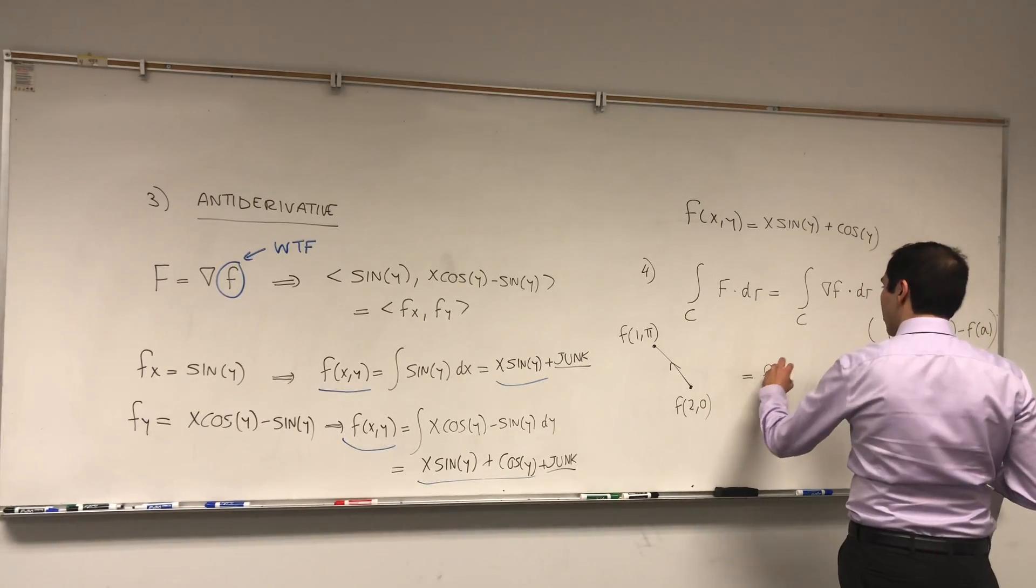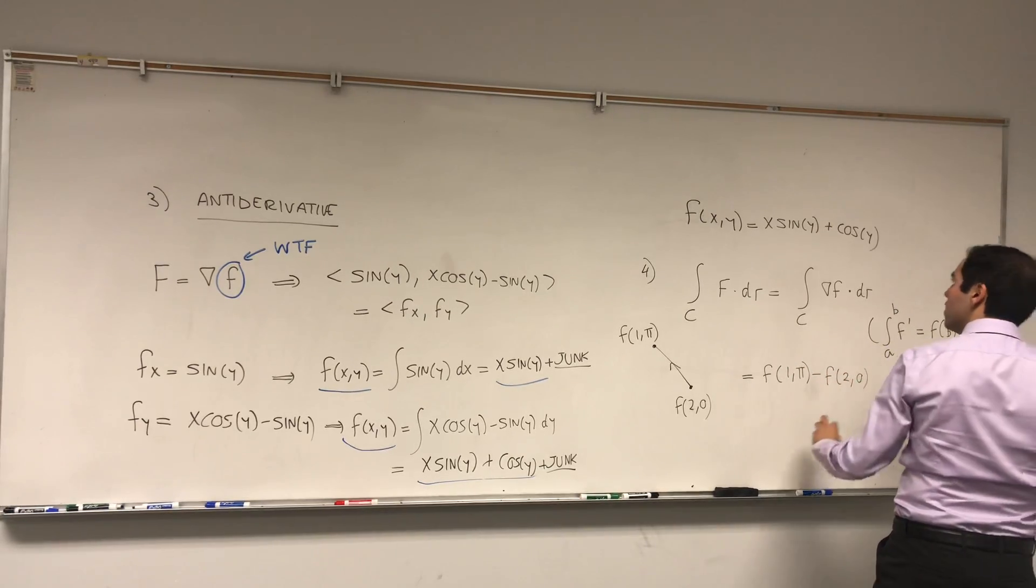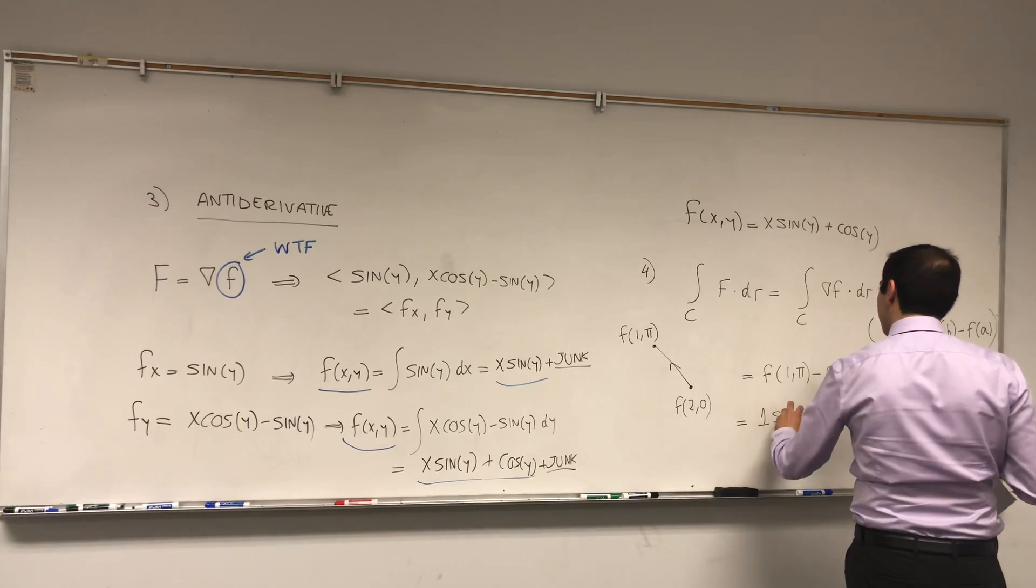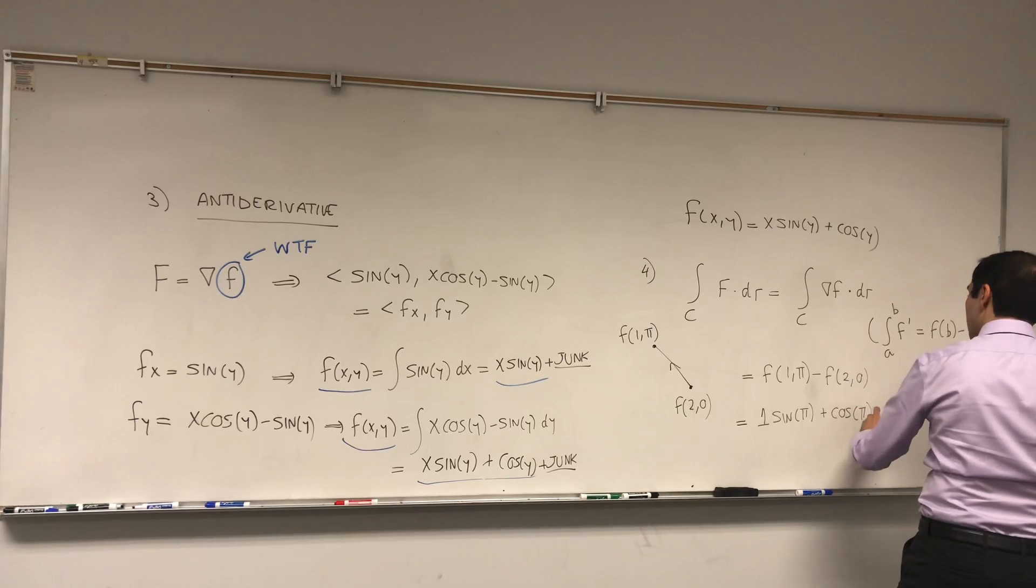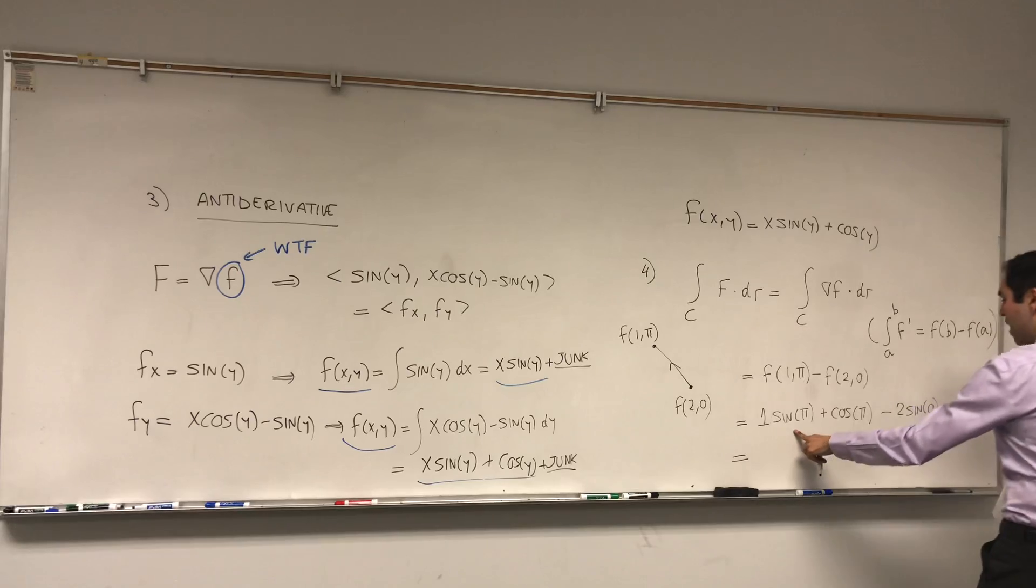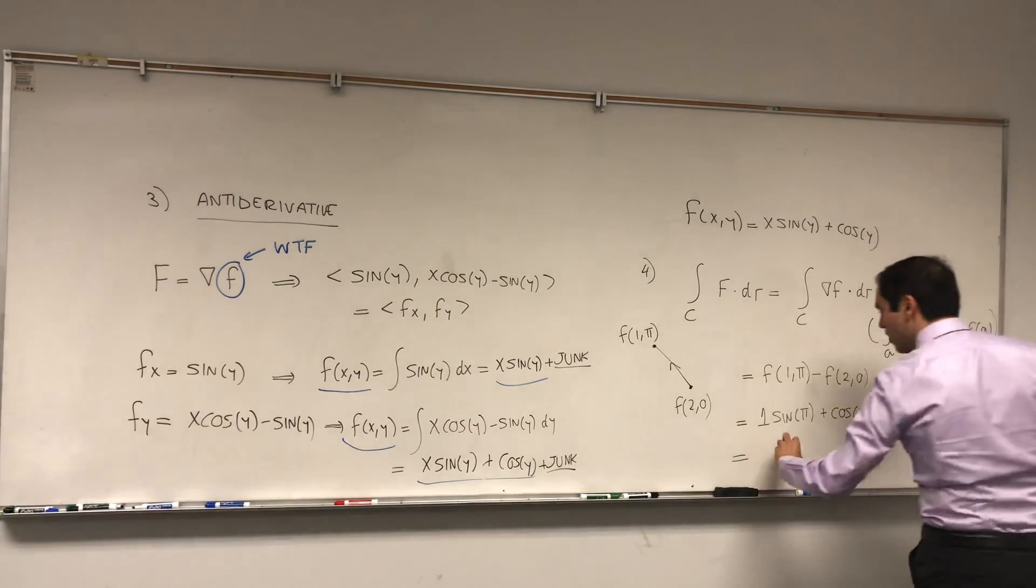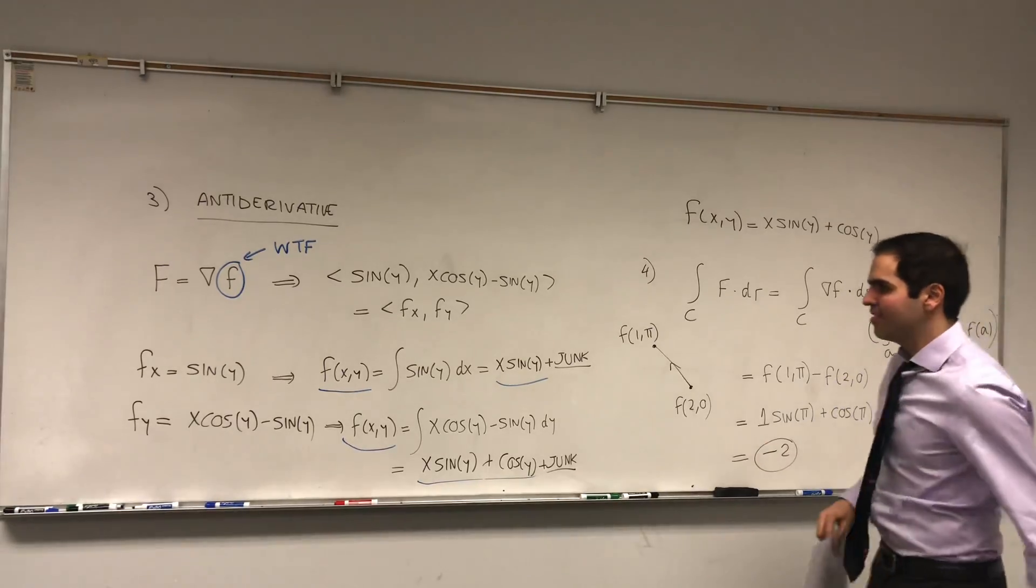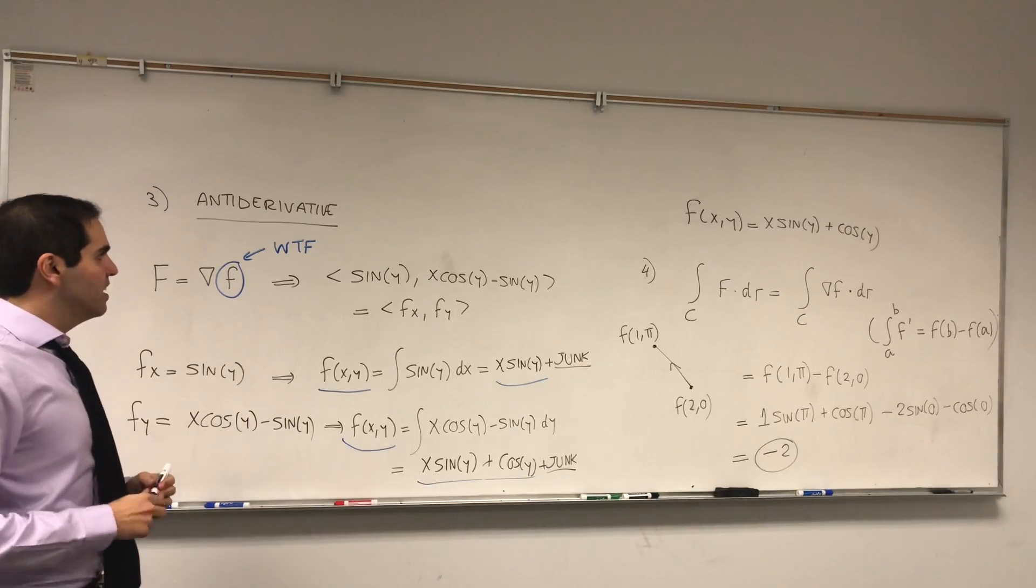So here we get f(1,π) - f(2,0), and that becomes 1·sin(π) + cos(π) minus 2·sin(0) minus cos(0). sin(π) is 0, sin(0) is 0, and then we just get -1 minus 1, and that's -2.